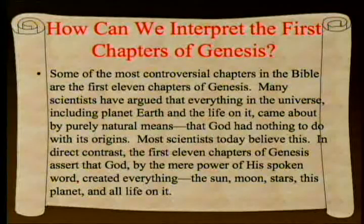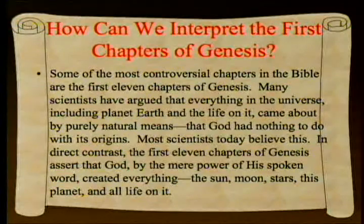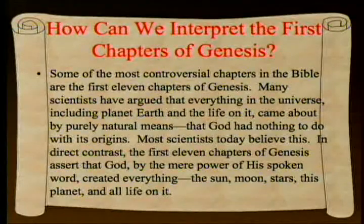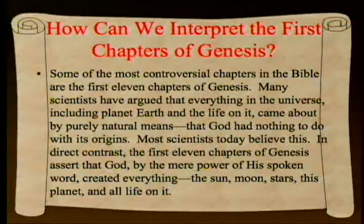He begins his chapter with the statement that some of the most controversial chapters in the Bible are the first 11 chapters of Genesis. Many scientists have argued that everything in the universe, including planet Earth and life on it, came about by purely natural means—God had nothing to do with its origins. The background of a certain variety of science says that God may or may not exist, but he's certainly unemployed if he does.